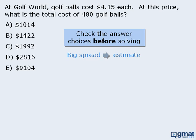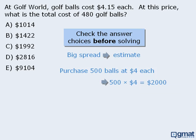So rather than use the original numbers, let's see how much it would cost to purchase 500 balls at $4 each. Well, 500 times $4 is $2,000, so our answer is approximately $2,000. Since only one of the five answer choices is even remotely close to $2,000, we know that C must be the correct answer. So by checking the answer choices first and seeing the numbers so spread apart, we were able to save ourselves considerable time.